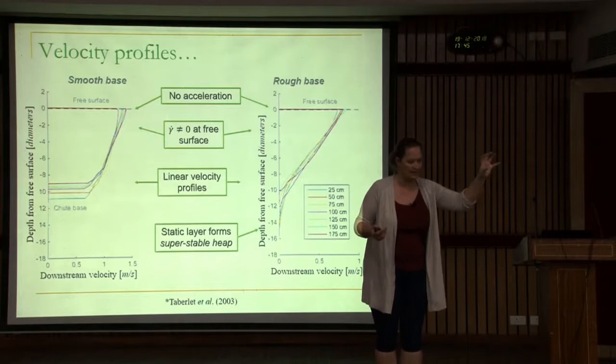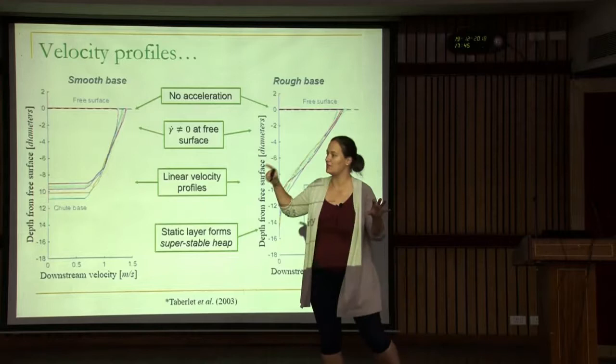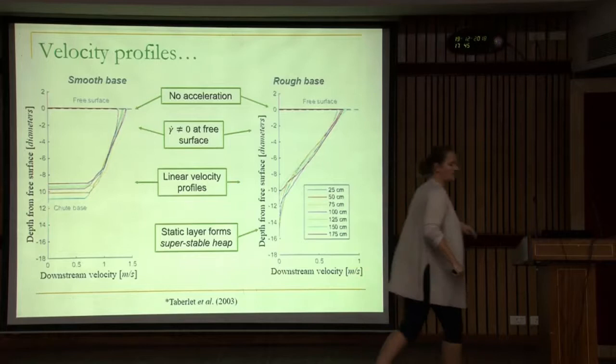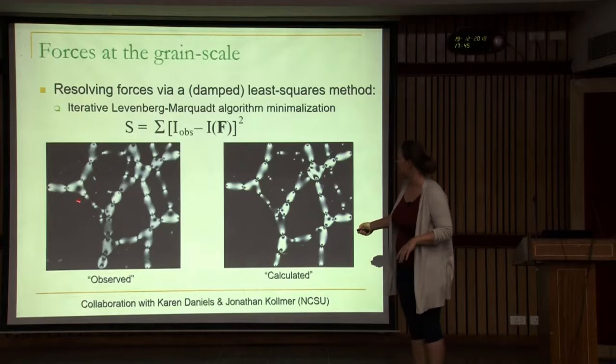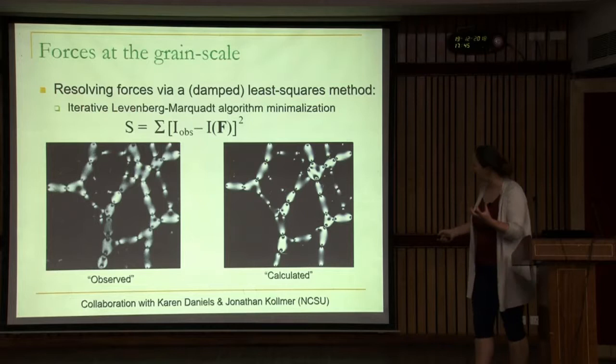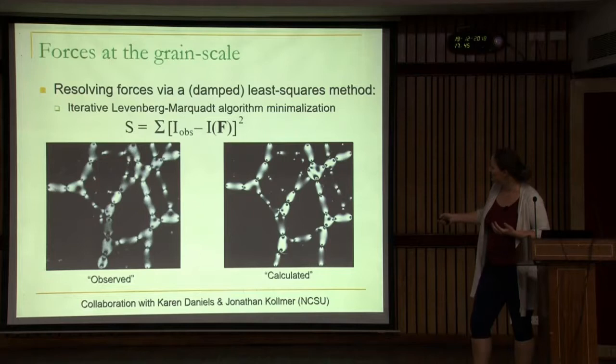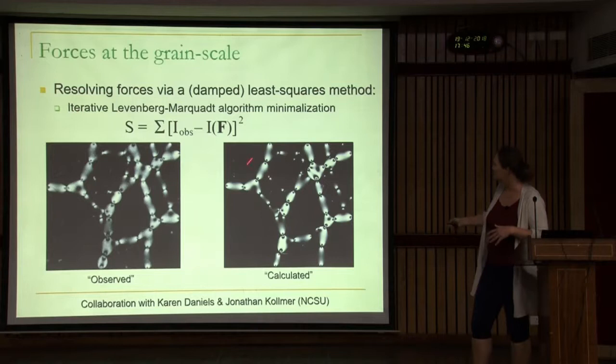Another important ingredient for resolving rheology is that beyond density, velocity profiles, and positions, we also have access to the forces and stresses in the flow. That's another key aspect of these photoelastic avalanches. Let me explain how we get that information. This is an observed network of forces — a static network — and we use a least-squares method, minimizing parameter s between the observed intensities and our calculated artificial intensities. We're looking for the solution which is the minimum between these two, giving our reconstructed picture.